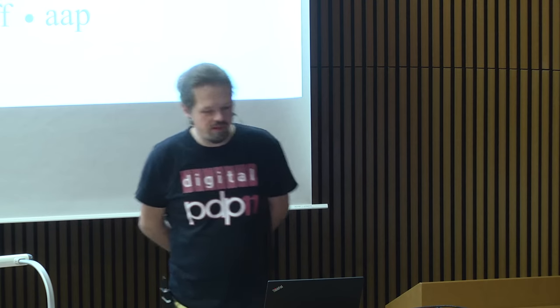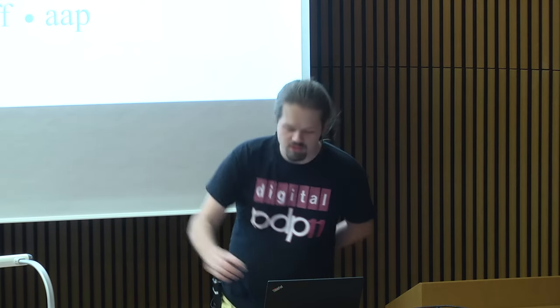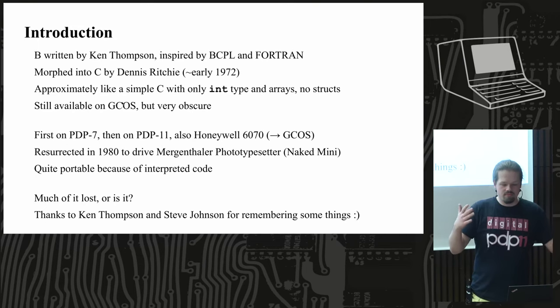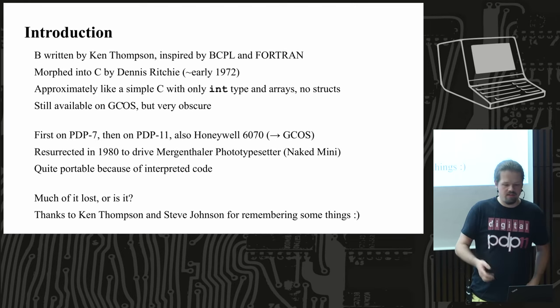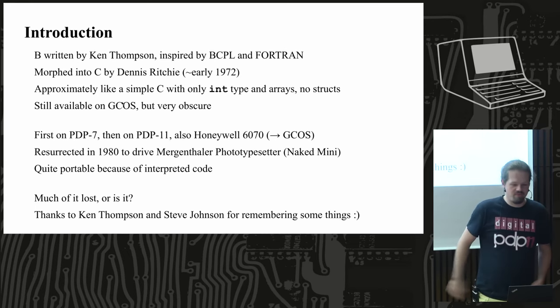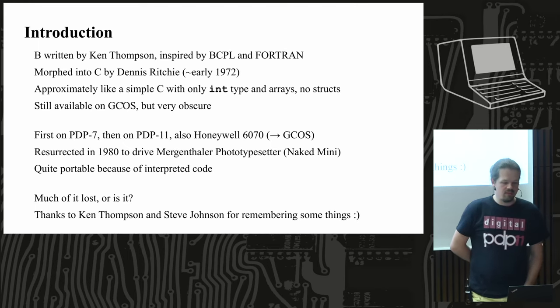Welcome to this talk on the B programming language. B was written by Ken Thompson, inspired by BCPL and Fortran. Ken Thompson is probably best known as the father of Unix. He wanted a Fortran compiler for the PDP-7 that he was writing Unix on, so he condensed the language — the result was B, which is very similar to BCPL. The name B is probably also a shorter version of BCPL.